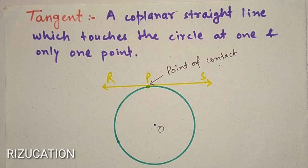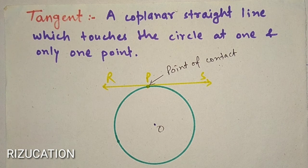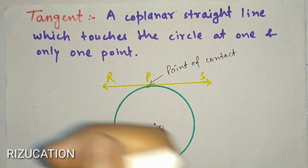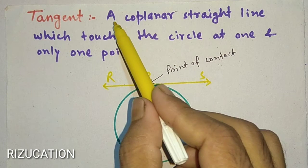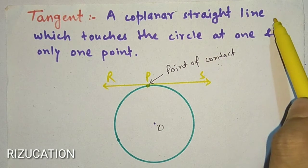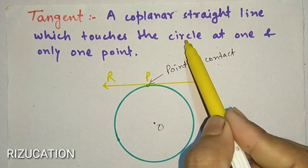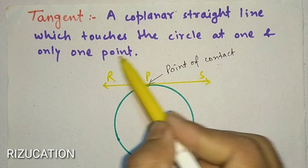Hello friends, in today's lecture we will learn about tangent. So first of all, let us start with the definition: a coplanar straight line which touches the circle at one and only one point.